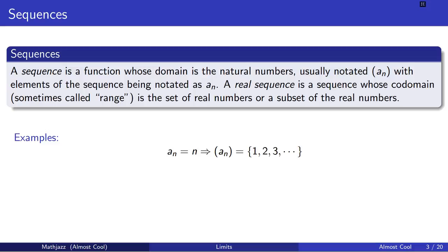Here are some examples. I have on the left of the arrow a sub n equals n. This is an equation describing the nth item on the list. So if I wanted to find the fourth item of the list, I plug in 4 and get a sub 4 equals 4. This equation computes particular elements of the sequence. On the right hand side, I have the sequence written out 1, 2, 3, and so on. The sequence written in parentheses a sub n is equal to this list.